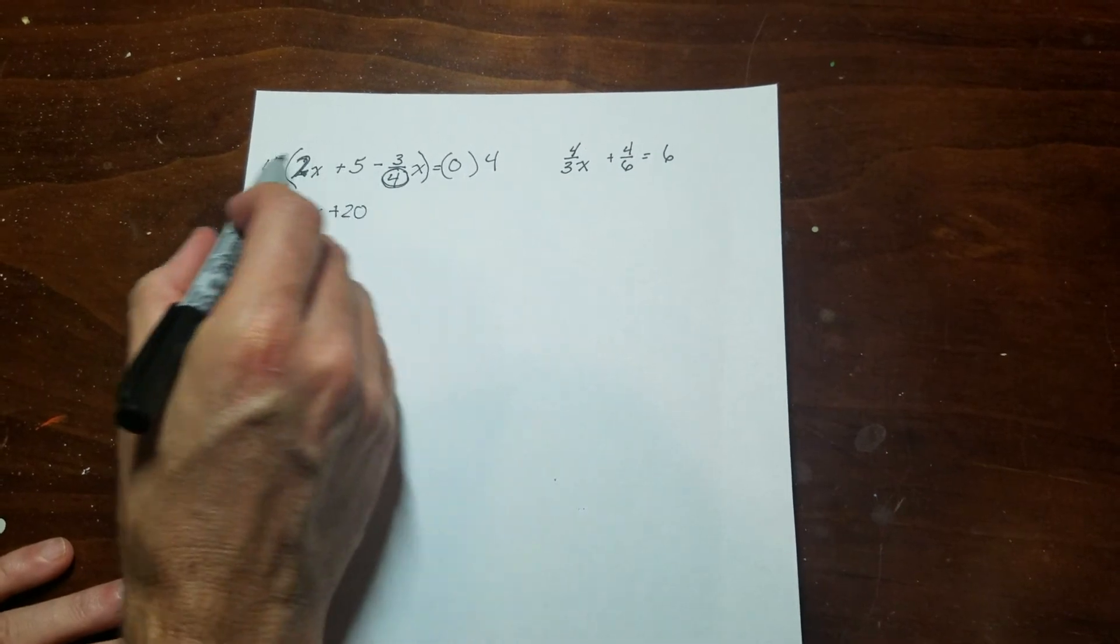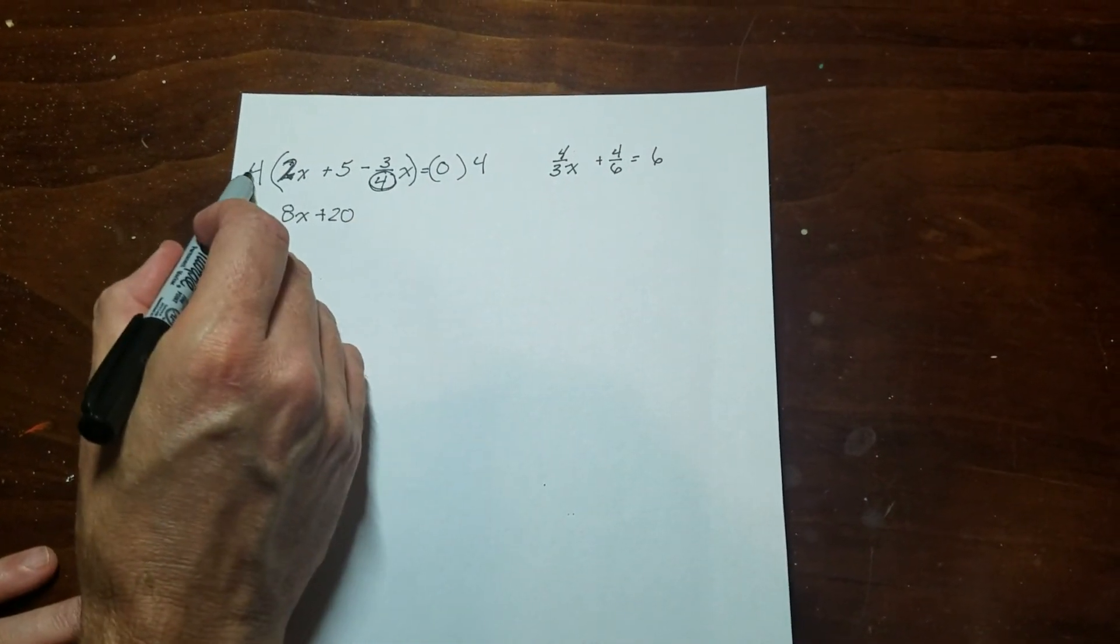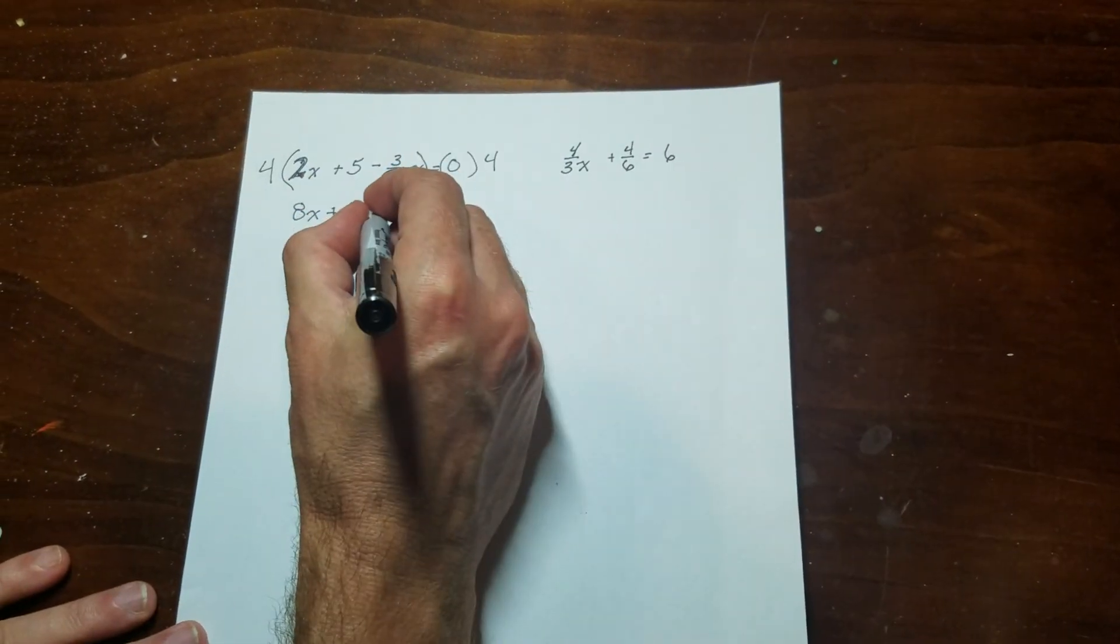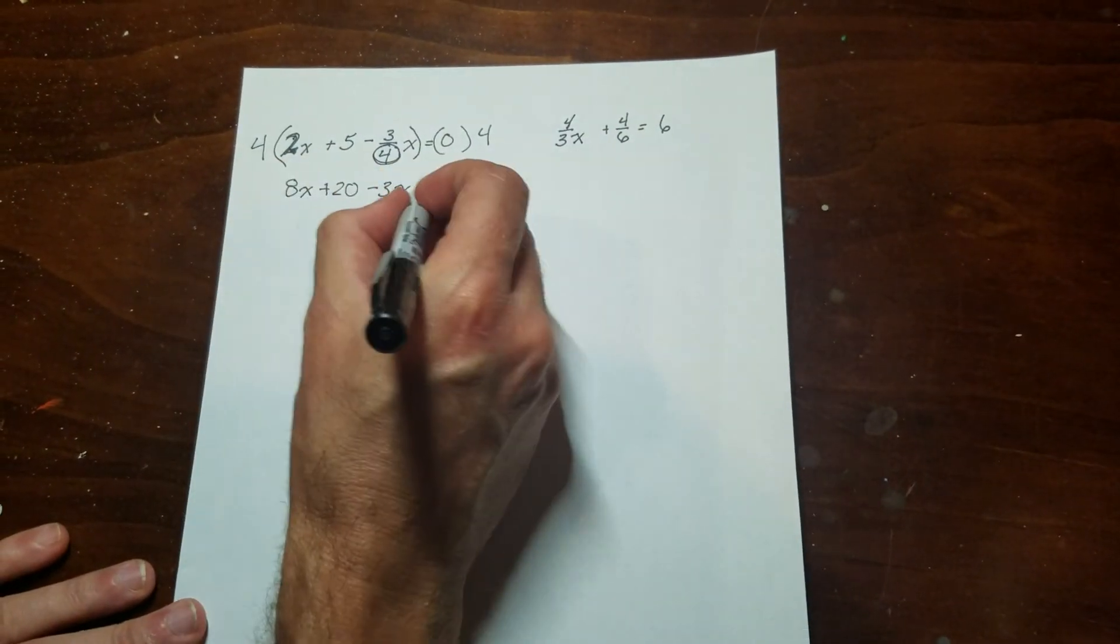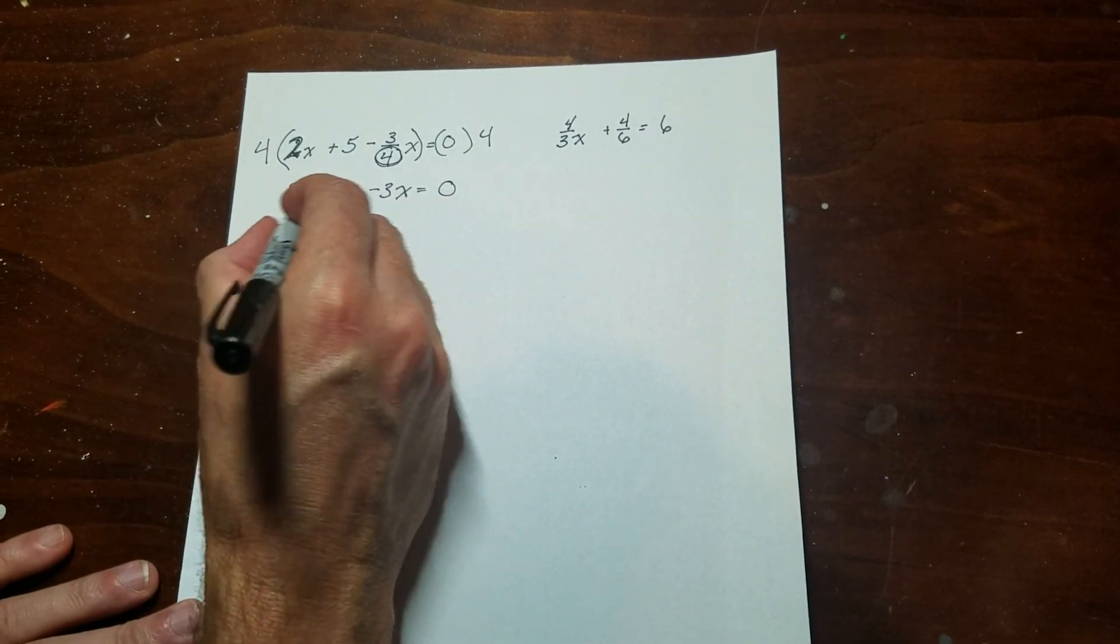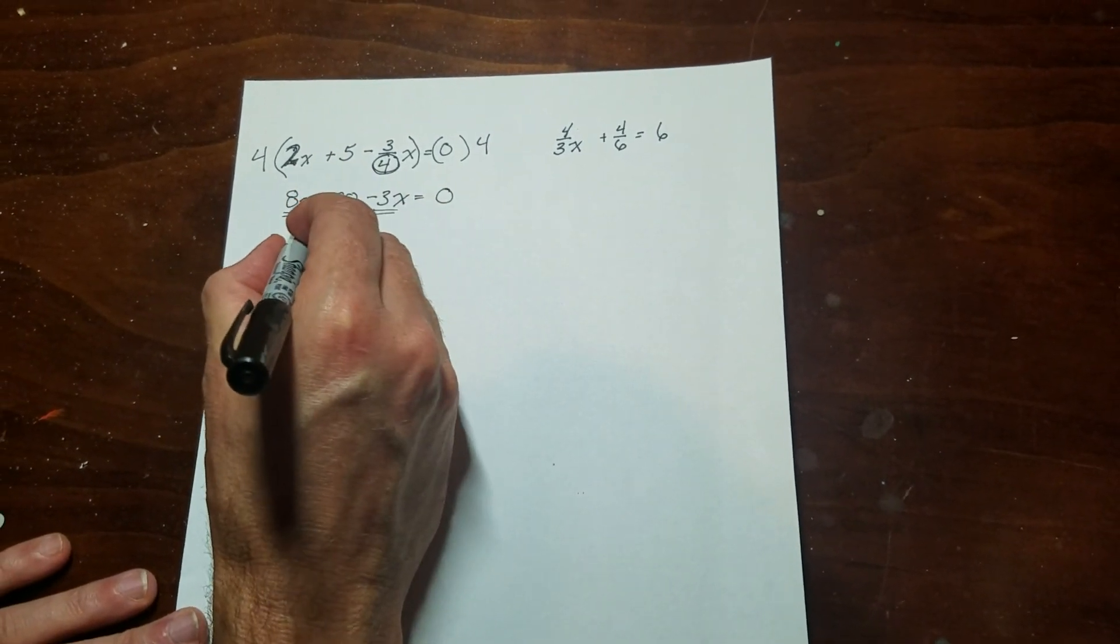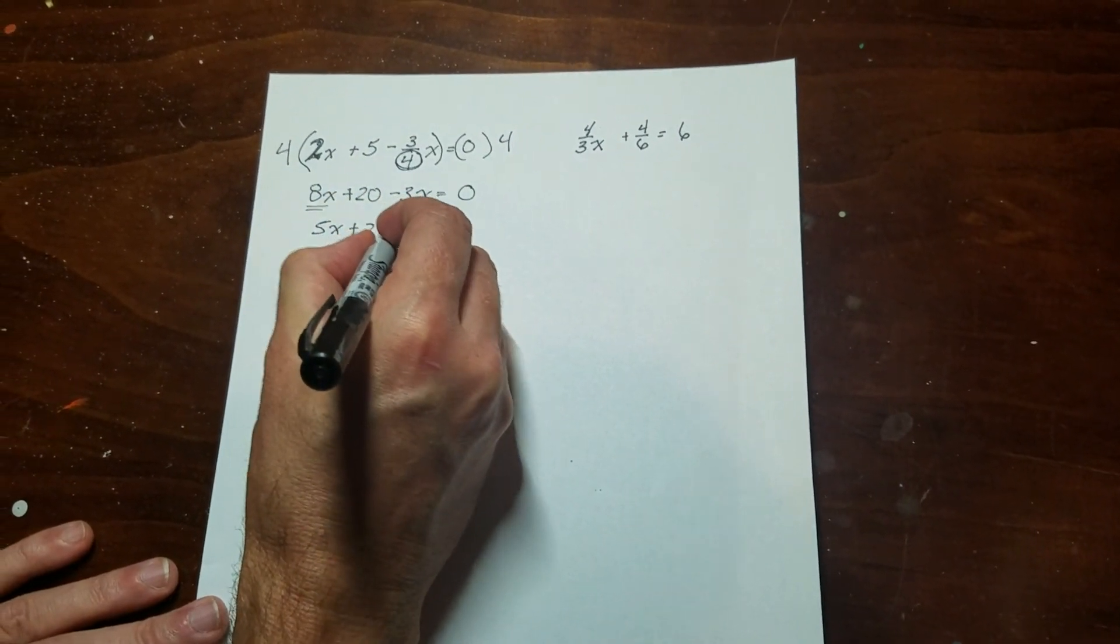So this would be 8x plus 20. And then just like we did, except it's the opposite, 4 goes into 4 one time. 1 times negative 3 is negative 3 with an x equals 0. So this would turn out like that. Then I could combine my like terms. And again, you've got a two-step equation.